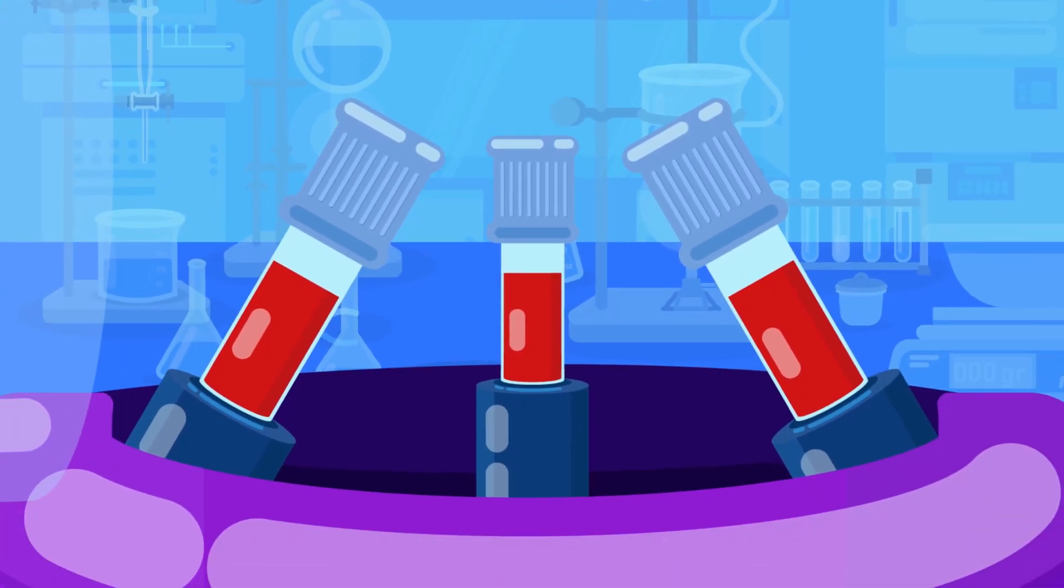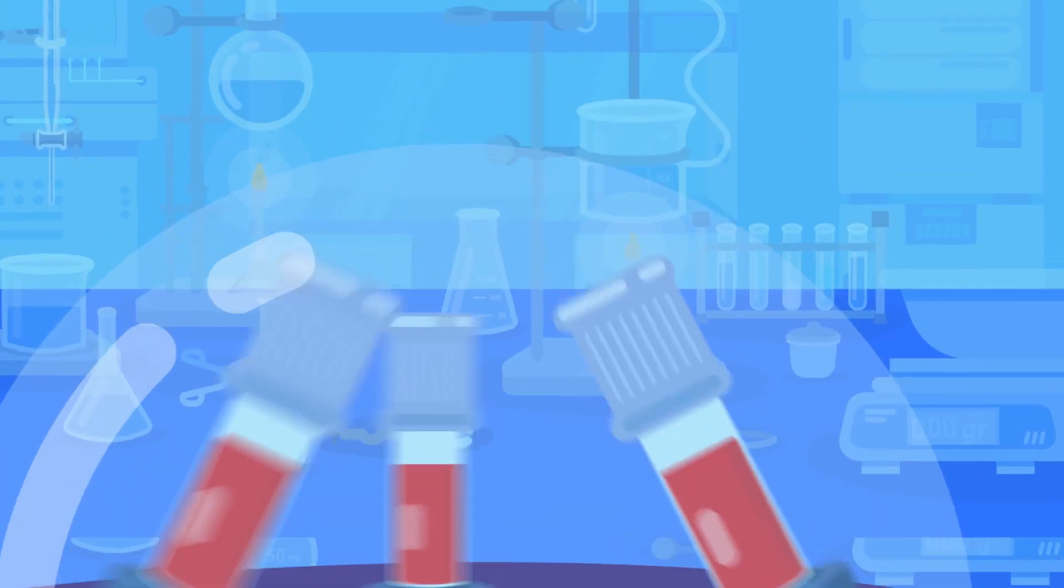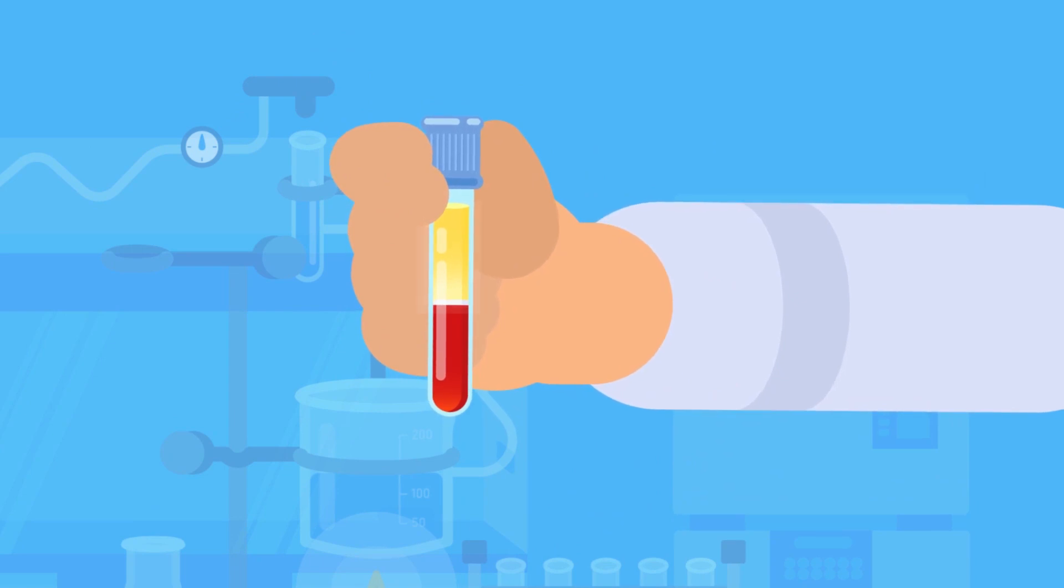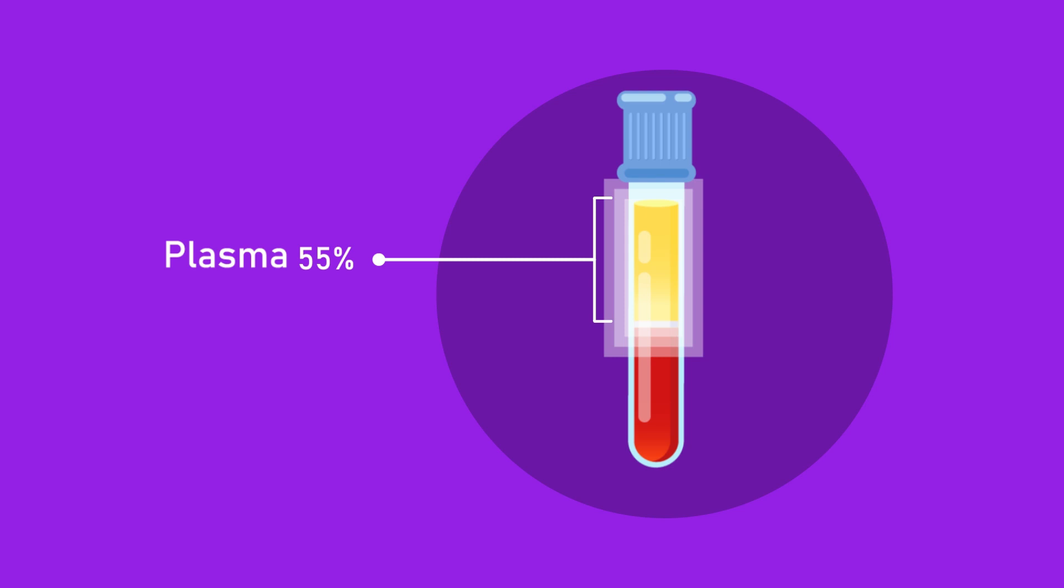When a sample of blood is spun in a high-speed centrifuge, the blood separates into three layers. The upper layer is pale-colored plasma, which makes up 55% of the blood.